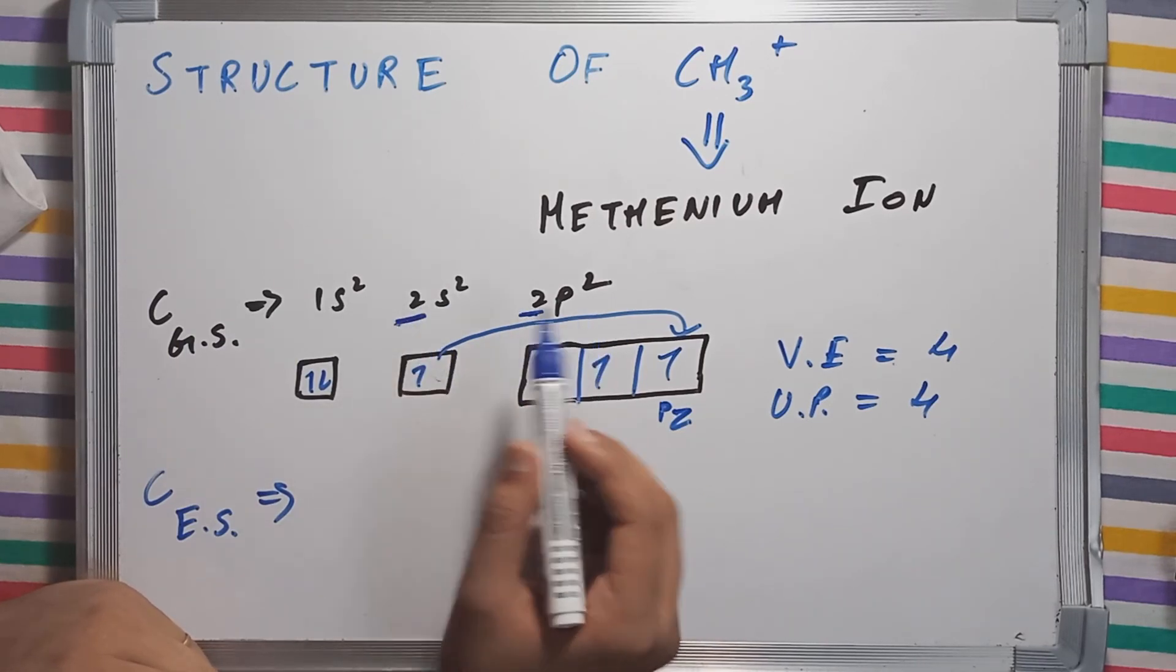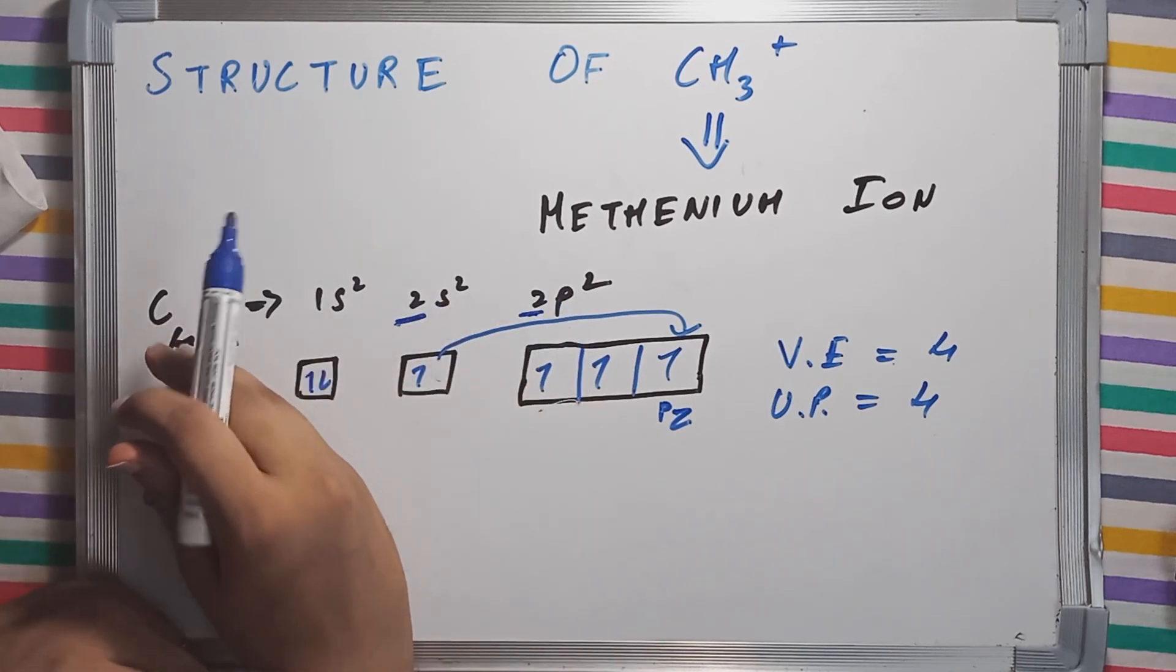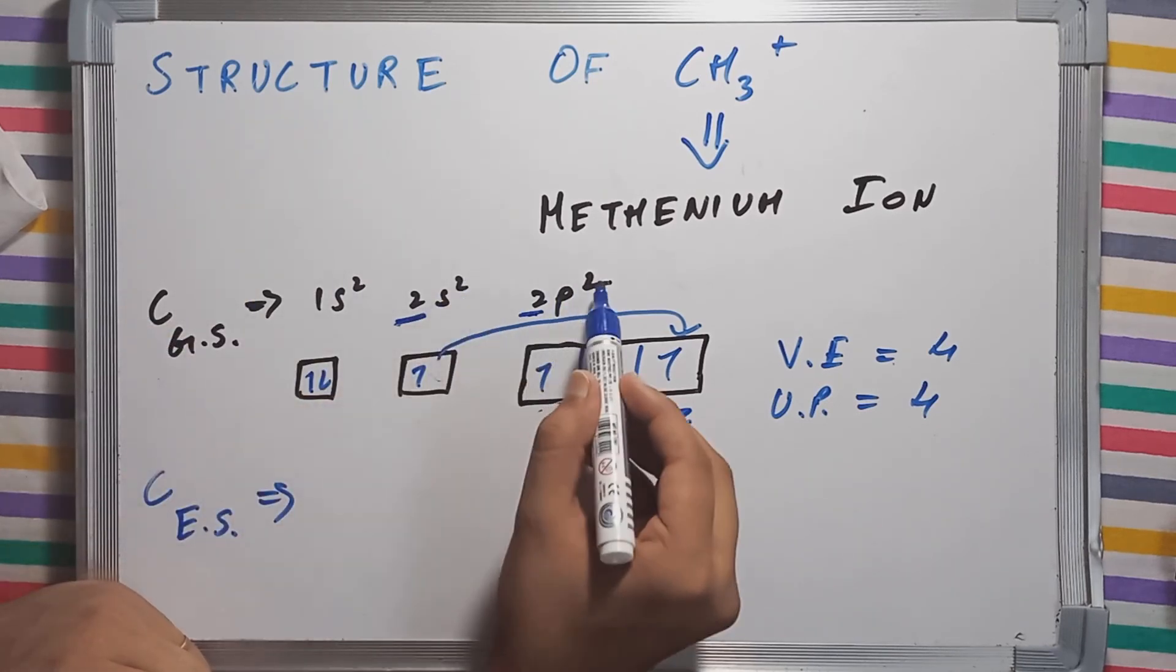There are 2 subshells for the second shell: the S subshell and P subshell for carbon. And it is having 2 plus 2, 4 electrons.